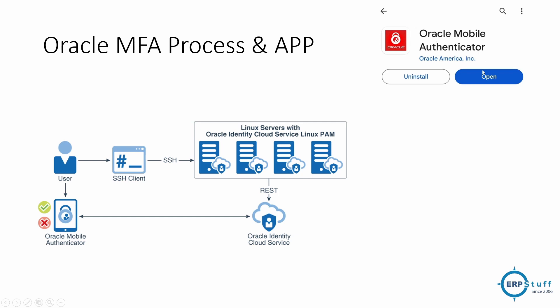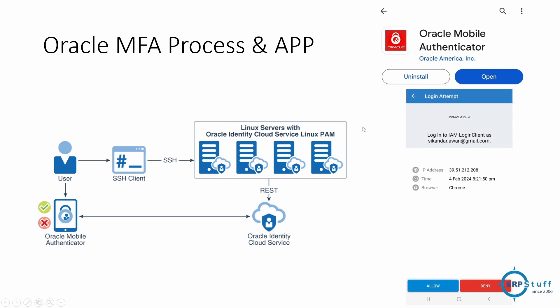You need to install the Oracle Mobile Authenticator on your mobile phone. Once you log in to Oracle Cloud, a notification will be sent to your mobile phone, and if you click Allow, you will be able to proceed with your login. Until you click Allow, you will not be able to log in.